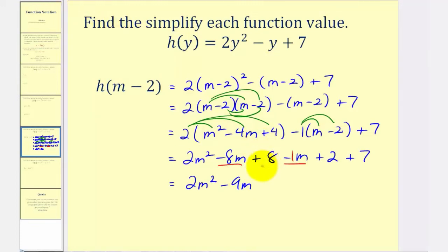And then we have 8 plus 2 plus 7, which is 17. So we found that h of m minus 2 is equal to 2m squared minus 9m plus 17.